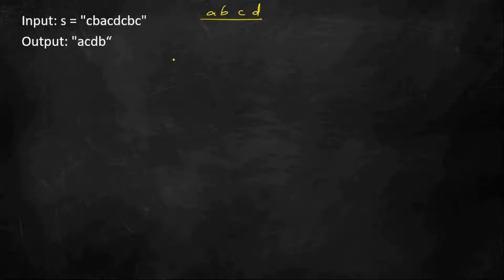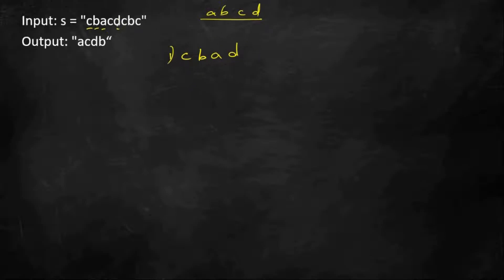One possible sequence is C, B, A, then D — selecting C first, then B, then A, then D, since C was already selected we won't pick it again. So when I select D, the sequence in string order is C appears first, then B, then A, then D. This is one valid sequence that includes all four unique letters.